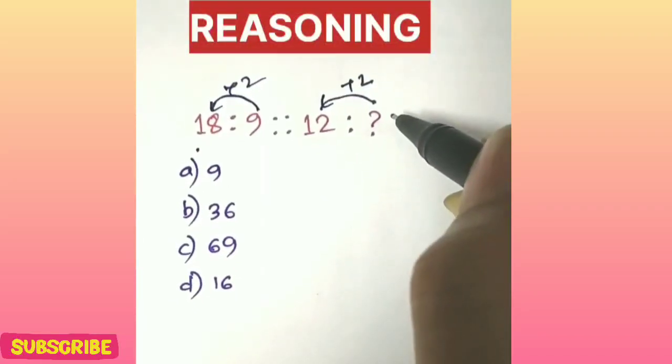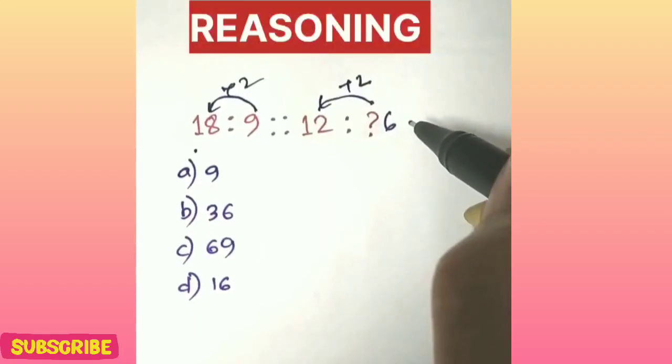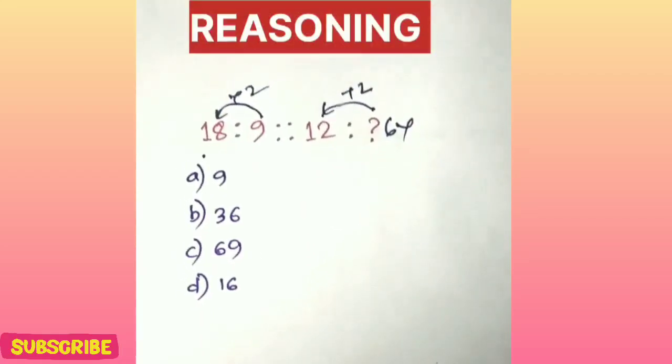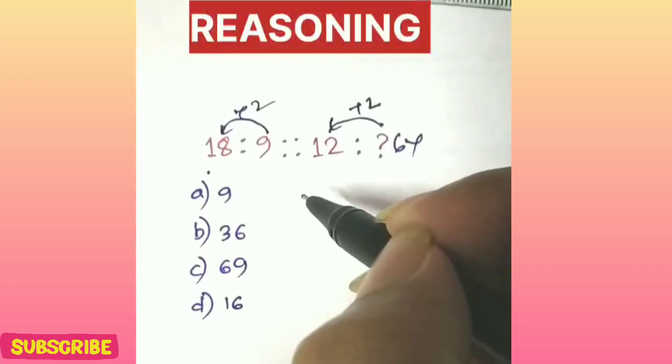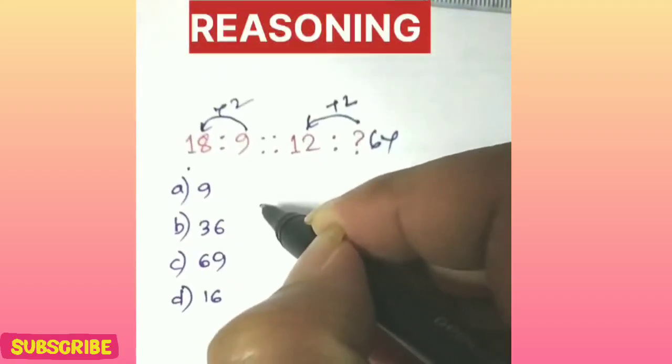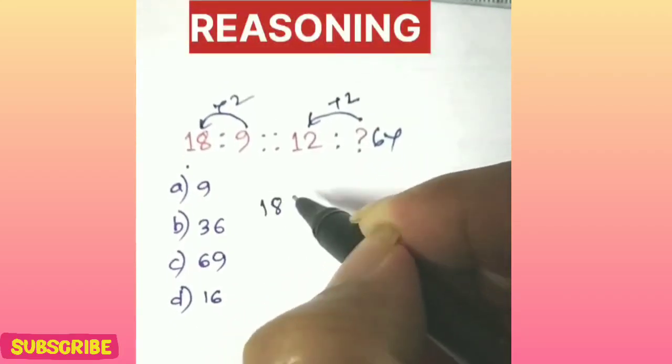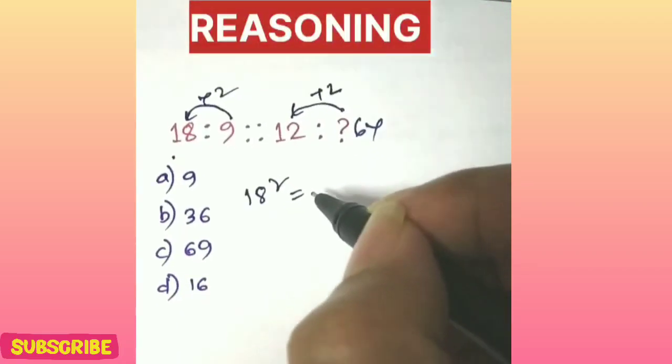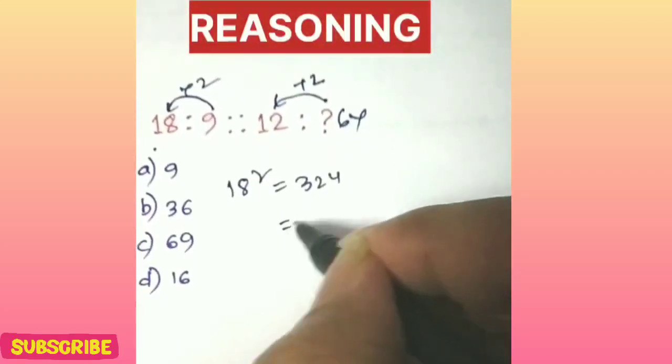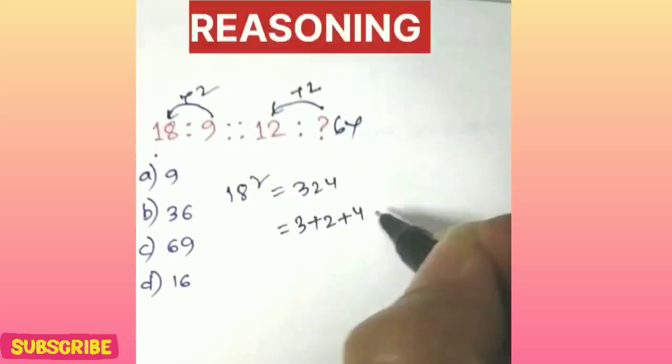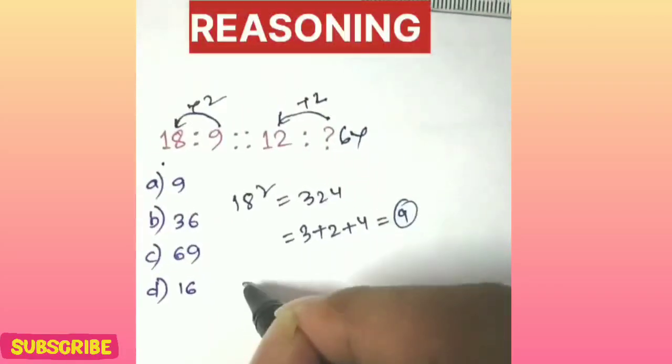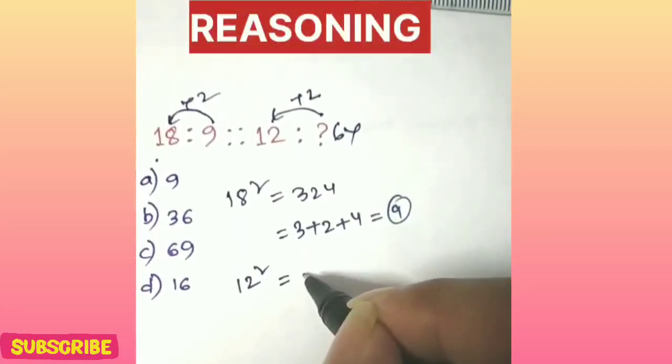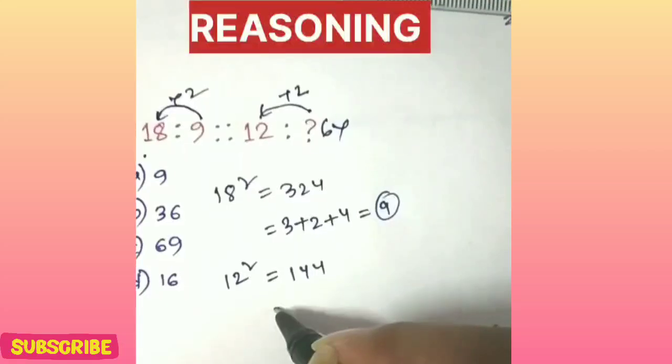6 to 12. No option is given as 6, so it is not right. Next way, we can take it through square. So 18 square is 324. If we add it, it becomes 9. And let's see, if you square 12, it's 144, so 1 plus 4 plus 4 equals 9.